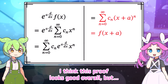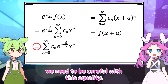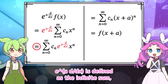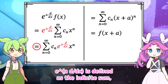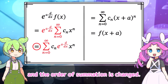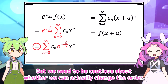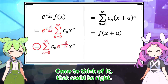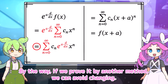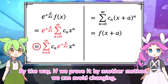I think this proof looks good overall, but we need to be careful with this equality. E to the A·D by DX is defined as the infinite sum, and the order of summation is changed. But we need to be cautious about whether we can actually change the order. If we prove it by another method, we can avoid changing the order.